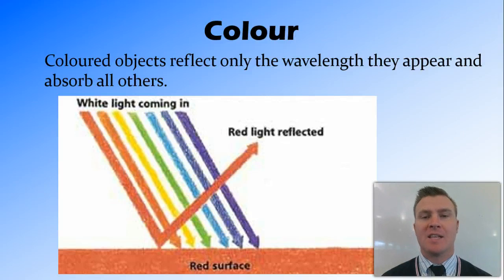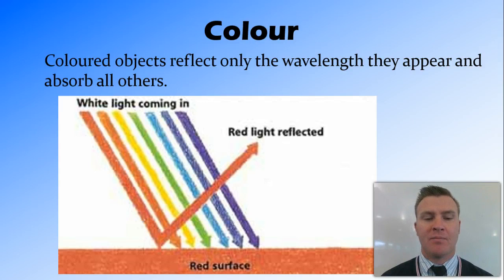If we had a surface that absorbed all wavelengths except for, for example, red and reflected red only we would perceive that object as being red. Because only the red light would be the one reflected, which is the one that we see.